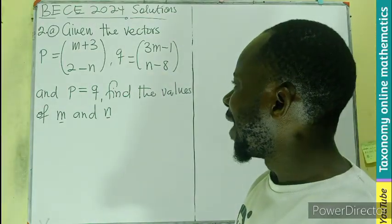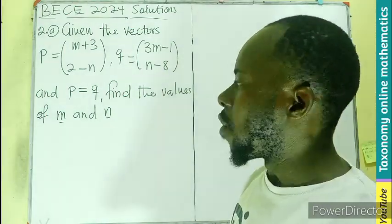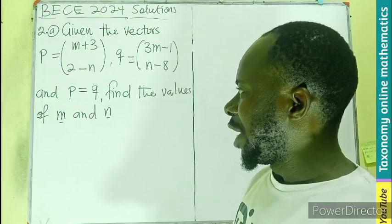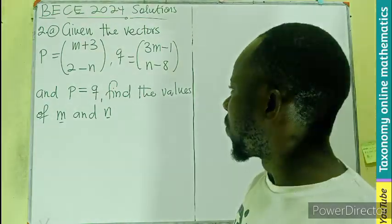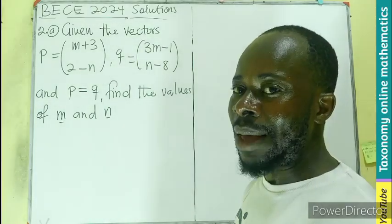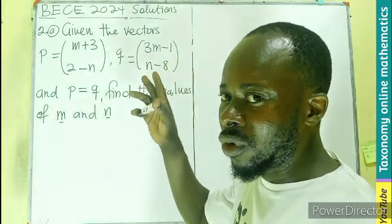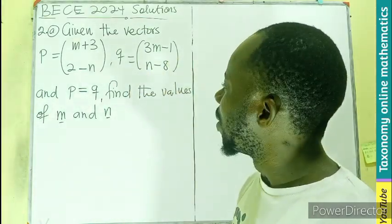then N minus 8 for the y-coordinate. And P equals to Q, meaning the vector P equals to vector Q, we have to find the values of M and N in those x-coordinate and y-coordinate.